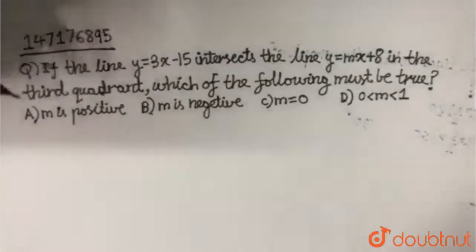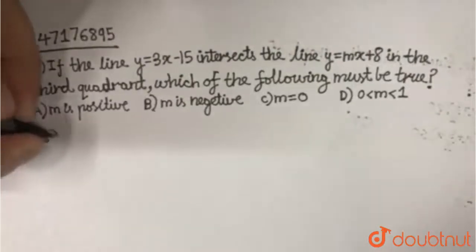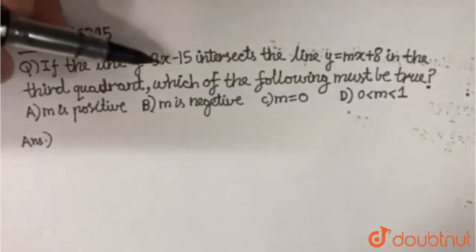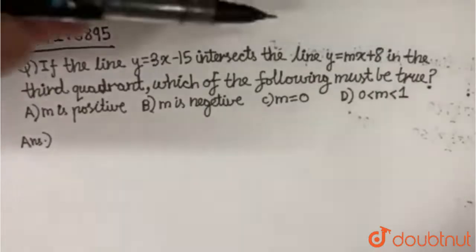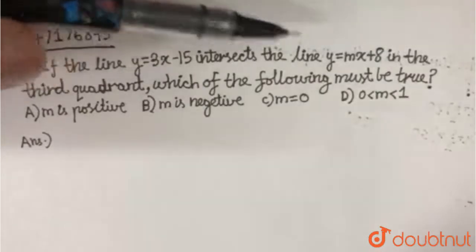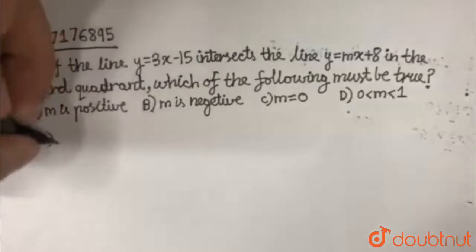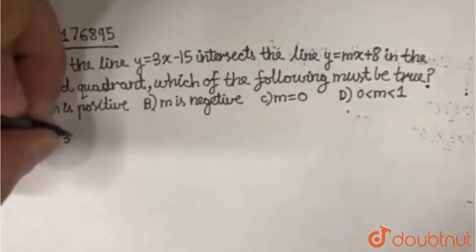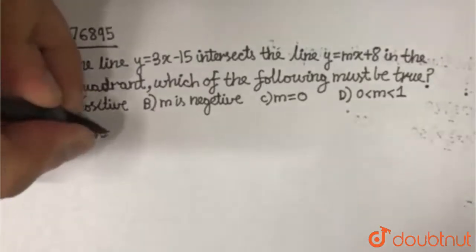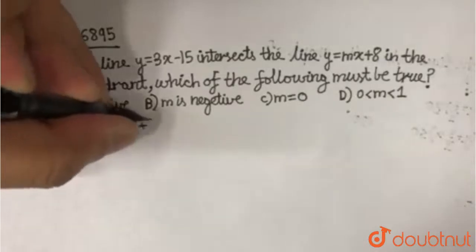Let us solve this question by a simple method. It says y = 3x − 15 equates with y = mx + 8 at any point in the third quadrant. So let us equate y: 3x − 15 = mx + 8.